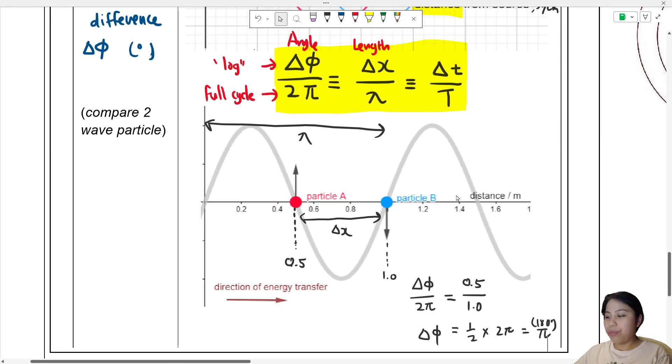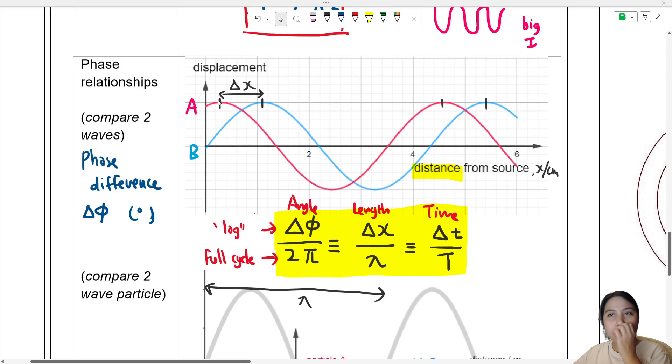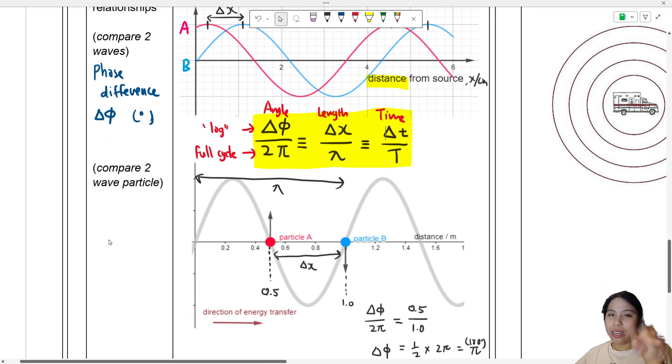So that is the conclusion for phase difference. Please remember the ratio, whether you are thinking in terms of angle, length, or units of time. The ratio still applies, whether you're comparing two particles or comparing two waves - same thing. Look for the lag. Think of the lag - one is lagging behind the other. And that is all for this video. I'll see you in the next one.